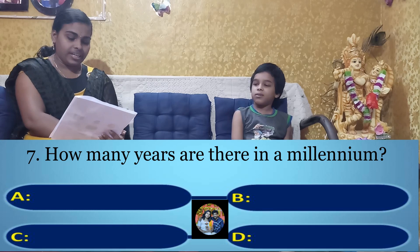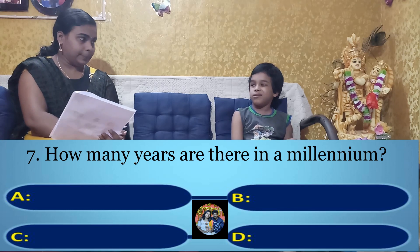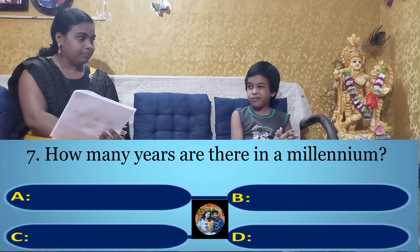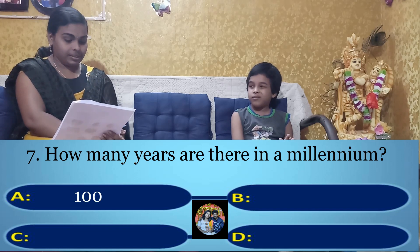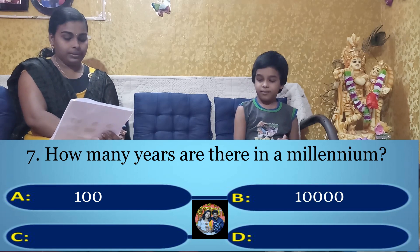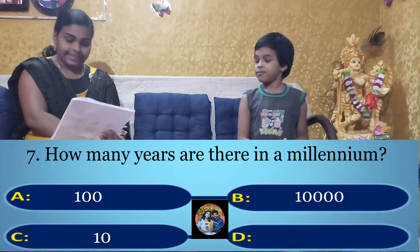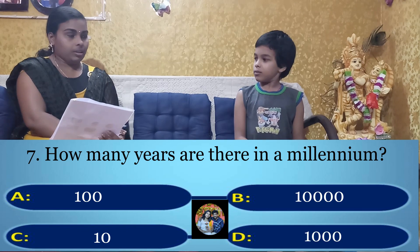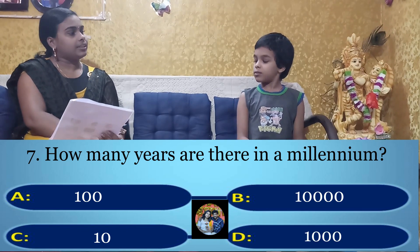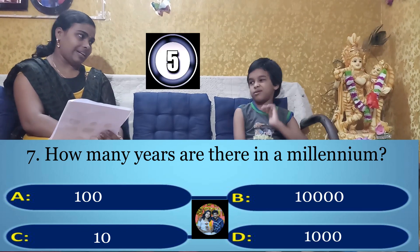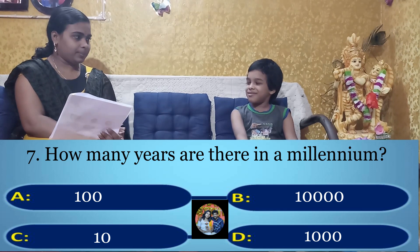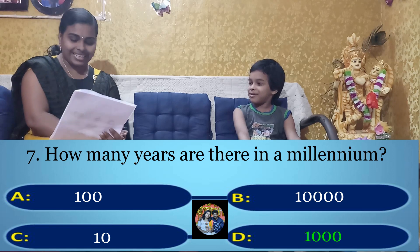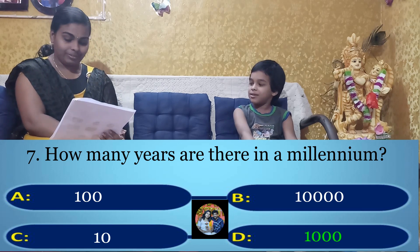Your seventh question: How many years are there in a millennium? Option A: 100, Option B: 10,000, Option C: 10, Option D: 1,000. Your time starts now. 1,000. Yes, the right answer is Option D: 1,000.